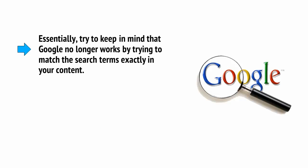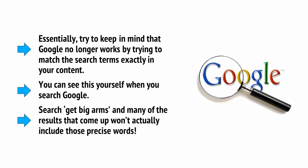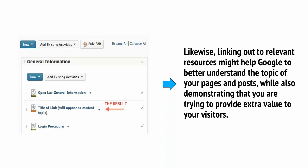Try to keep in mind that Google no longer works by trying to match search terms exactly in your content — you can see this yourself when you search Google. Search 'get big arms' and many results that come up won't actually include those precise words. Likewise, linking out to relevant sources might help Google better understand the topic of your pages and posts, while also demonstrating that you're trying to provide extra value to your visitors.